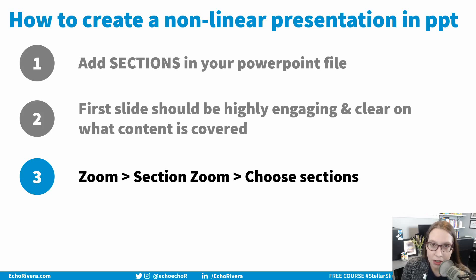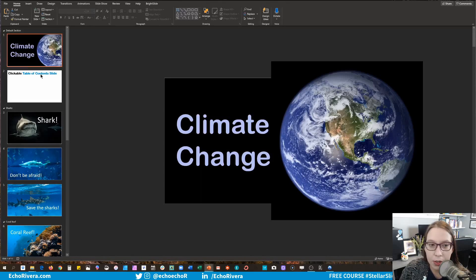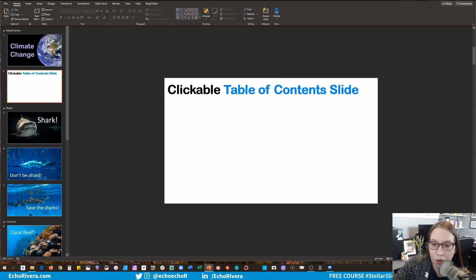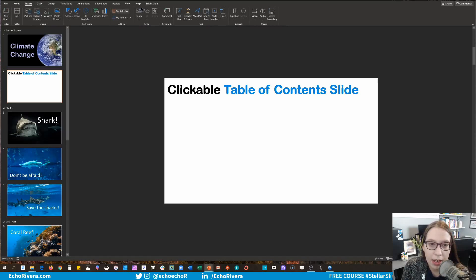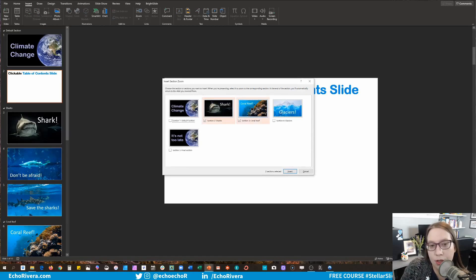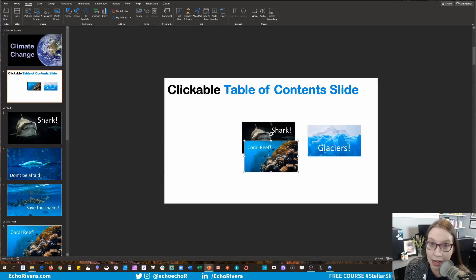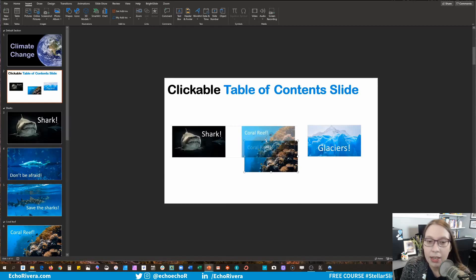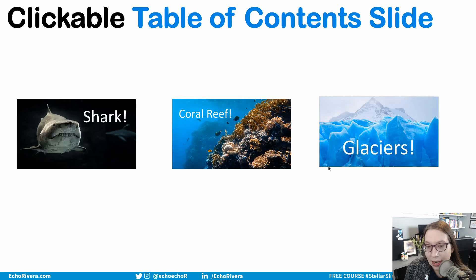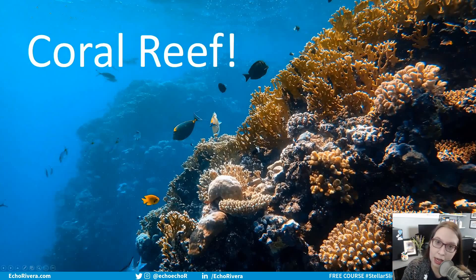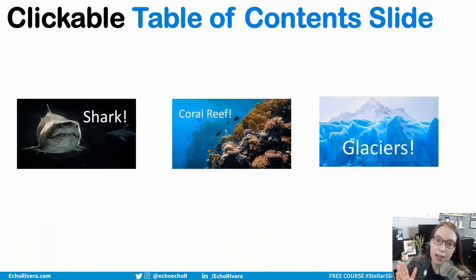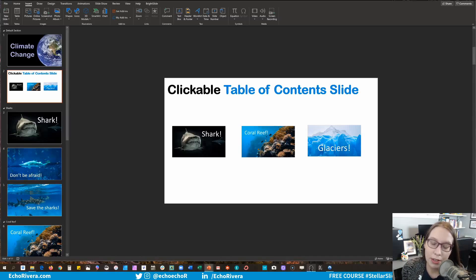The next thing you're going to do is add the clickable table of contents using the Zoom section in PowerPoint. You create a blank slide before everything, then go to Insert, click on Zoom, and click Section Zoom. Then you choose the thumbnails for the sections you want in your clickable table of contents. There they are as nice images — exactly what you have on the actual slide. You can rearrange them in whatever order you want. Now I'll test it out: I click on one and it takes me to that section, and when I'm done it takes me back to the clickable table of contents.